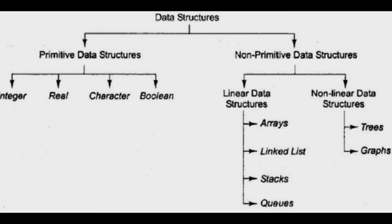Primitive data structures are categorized into four types. First, integer — a single number without a fractional part. Next, character — a single character. Next, float — a number with a decimal or fractional point. And boolean — it checks whether a condition is true or false.